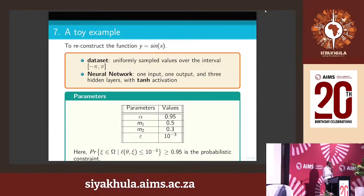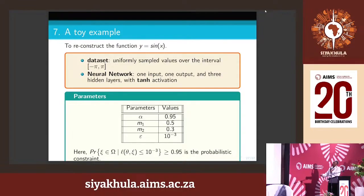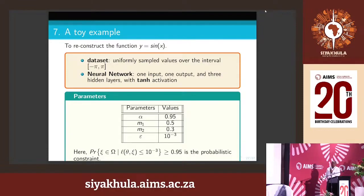We want to test whether this approach works. Instead of starting with a hard problem, we try a simple one. I gave it to my PhD student Mr. Remy about one month ago to see whether our idea works. He took the function y = sin(x), discretized x, and generated a data set between minus pi and pi. He designed a neural network with one input, one output, and three hidden layers. We fix alpha and the approximation error — the L function is set to 10 to the power of minus 3 with a 0.95 reliability level.